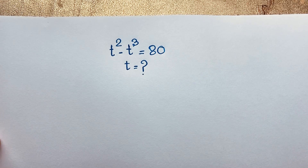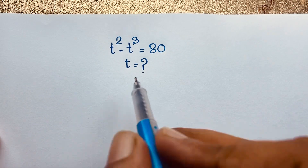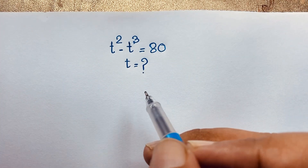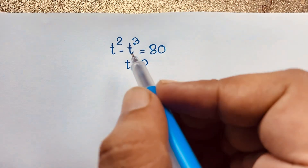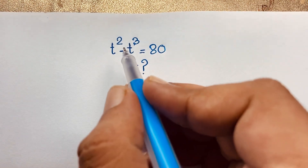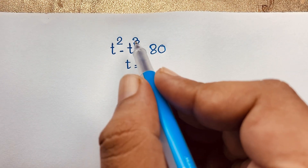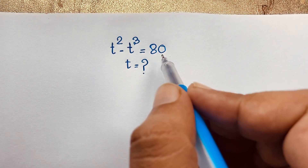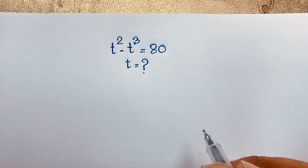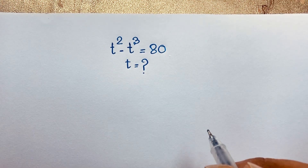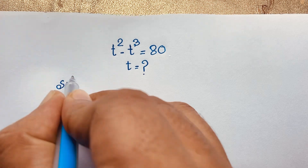Hello everyone, welcome to Russell's classroom. Today we have solved an interesting exponential math problem, which is t to the power 2 minus t to the power 3 is equal to 80. t is equal to what? How to solve this interesting math question — our math solution.